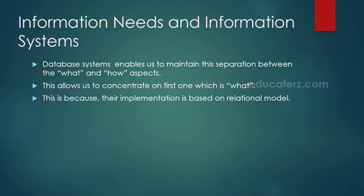Database systems enable us to maintain this separation between what and how. 'What' indicates what information needs to be stored and in which format. 'How' indicates how the data is being processed and reported to the user. This allows us to concentrate on the 'what' first. This is because their implementation is based on the relational model.